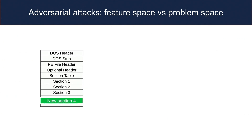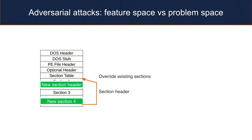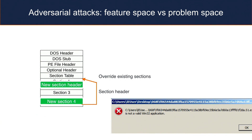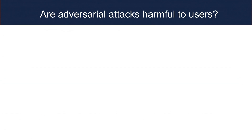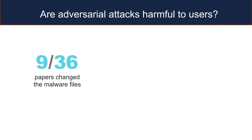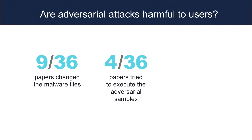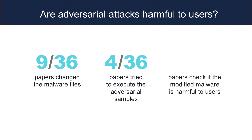Another case: when adding a new section, you have to change the file header so the file knows the new section exists. But if there isn't enough space in the header, it might override existing sections, resulting in a corrupted file or one that does nothing. We examined how many research papers asked whether adversarial attacks are harmful to users. Only one-fourth of papers changed the actual malware files; the rest did attacks only on feature vectors. Among those, only four papers tried to execute the file. And how many checked if the attack was actually harmful to users? Zero.